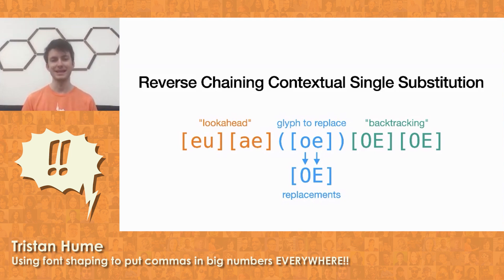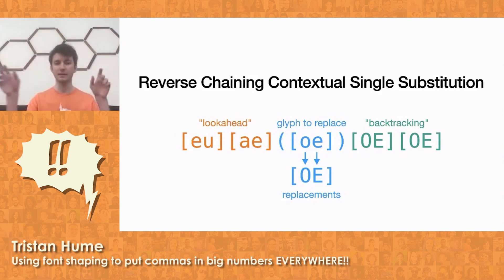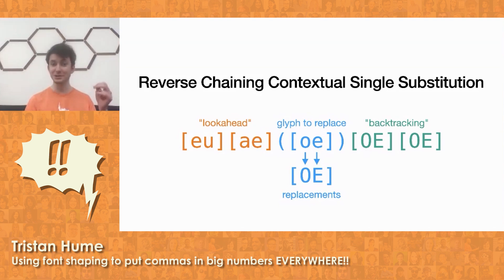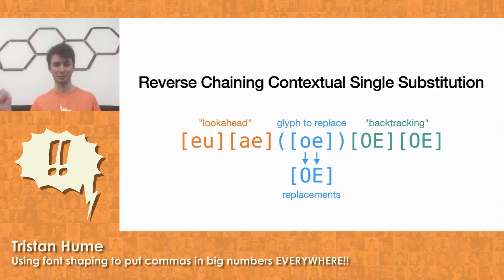This rule acts kind of like a certain type of regular expression where everything is a glyph class — glyph classes are kind of like regex character classes that match a set of glyphs in a specific position. There's a single position to replace with a class of possible glyphs and replacements for each of them, as well as lookahead and backtracking classes matching positions around that glyph. This rule type was originally designed for a type of Arabic calligraphy for left-to-right shaping, but since Arabic calligraphy is a right-to-left context, it has to work from the end of the string to the beginning. So in my left-to-right context, that's exactly what I wanted — it would work right-to-left.